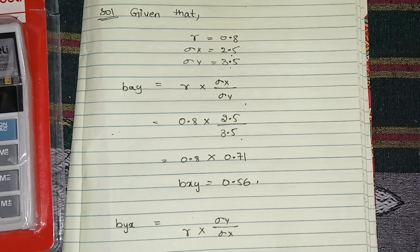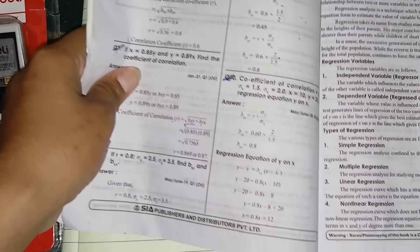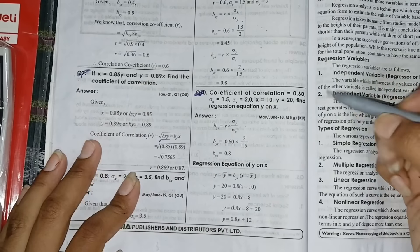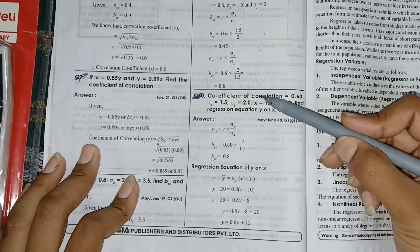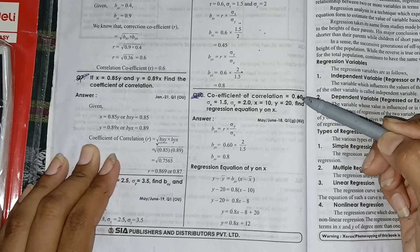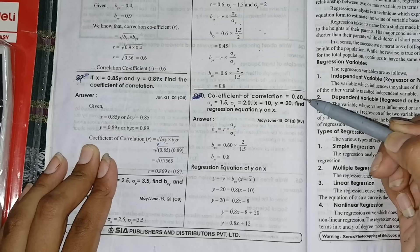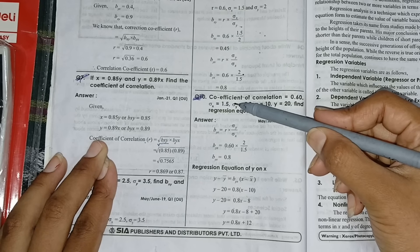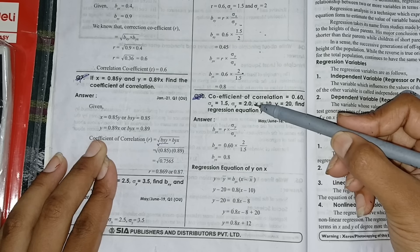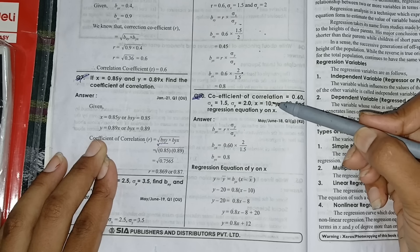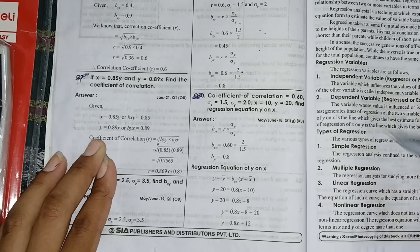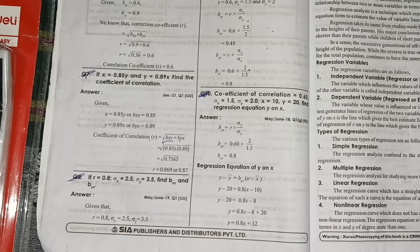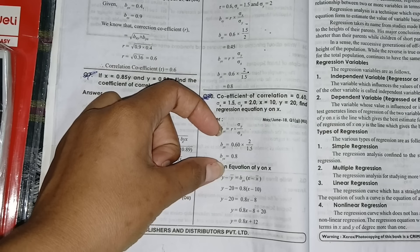I will give you some homework problems now. Here you see, they have given coefficient of correlation 0.60, means r is equal to 0.60, standard deviation of x is equal to 1.5, standard deviation of y is equal to 2.0.